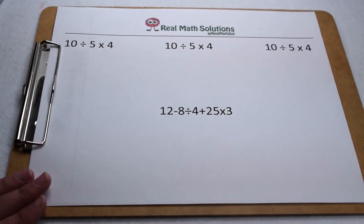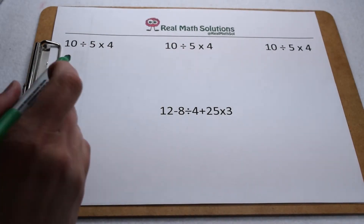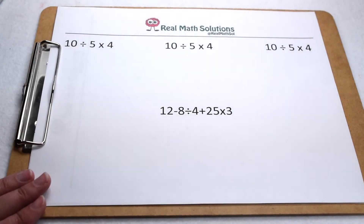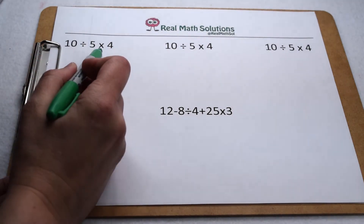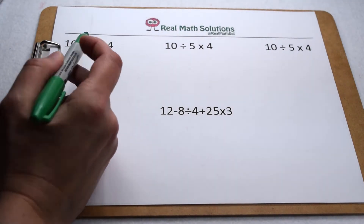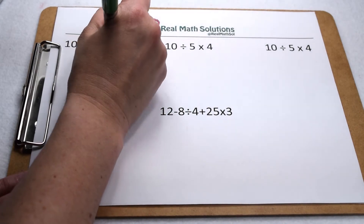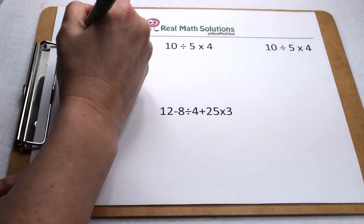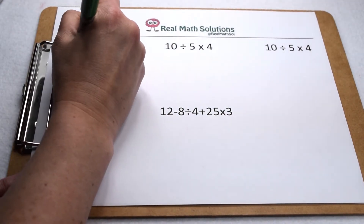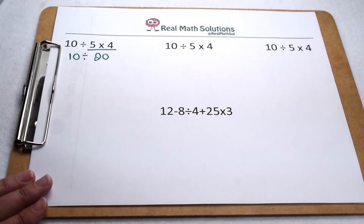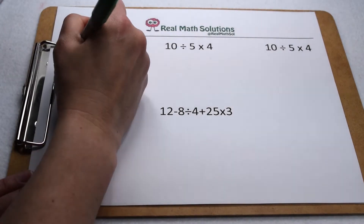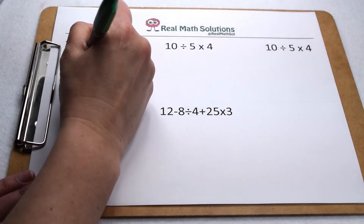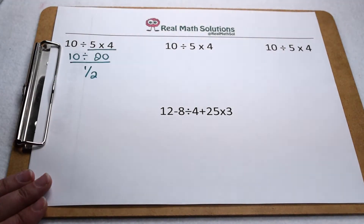If order is so important in order of operations, let's take this same problem and work it out 3 different ways. First, we're going to take PEMDAS literally and multiply before we divide. If we multiply first, we would solve 5 times 4. 5 times 4 gives us 20, so we would then have 10 divided by 20. 10 divided by 20 comes out to be 1 half.